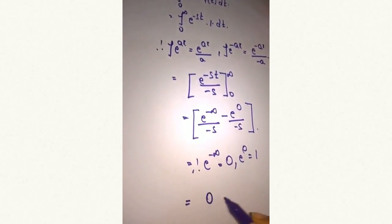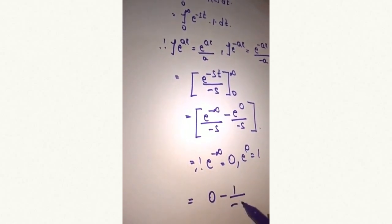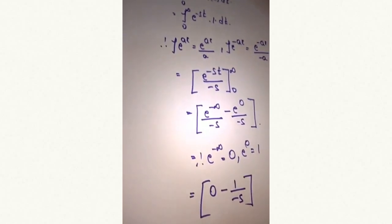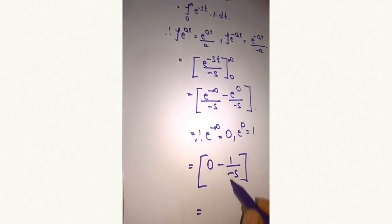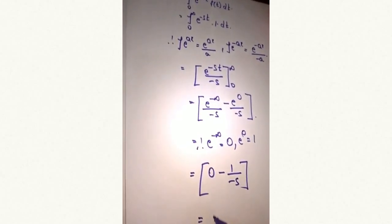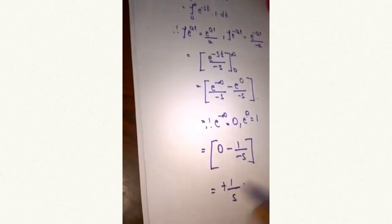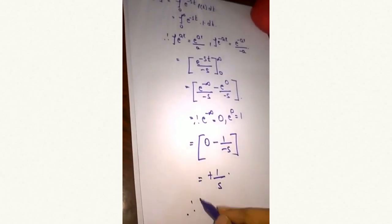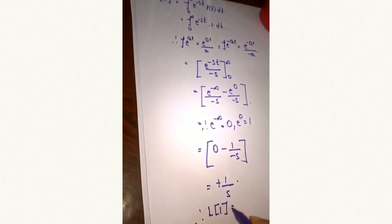This gives us 0 minus 1 over minus s. Minus times minus is plus, so we get 1 by s. Therefore, Laplace of 1 equals 1 by s.